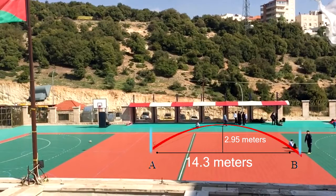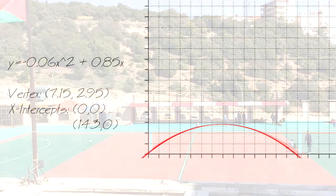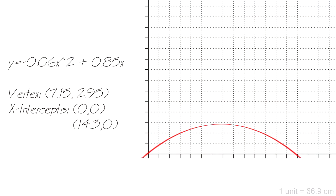This time the ball was shot from a smaller angle, and reached its target after 14.3 meters within 1.64 seconds, then plotted on a graph. The quadratic equation of this graph was y equals negative 0.06x squared plus 0.85x. As before, the negative coefficient of x represents that the parabola has a maximum point, and since the y-intercept is 0, c also has a value of 0.